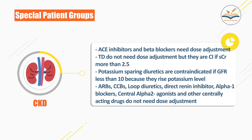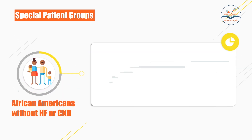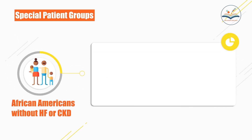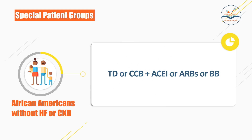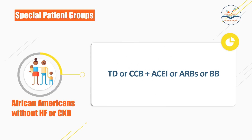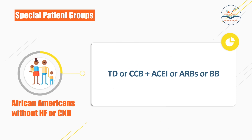In African Americans without heart failure or chronic kidney disease, preferred agents are thiazide diuretics or calcium channel blockers, plus ACE inhibitors or ARBs or beta blockers.